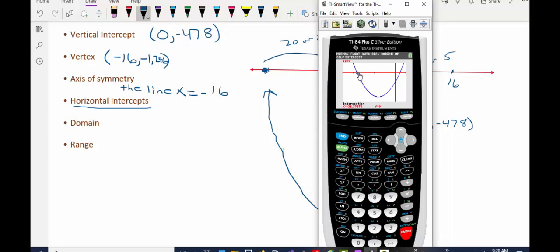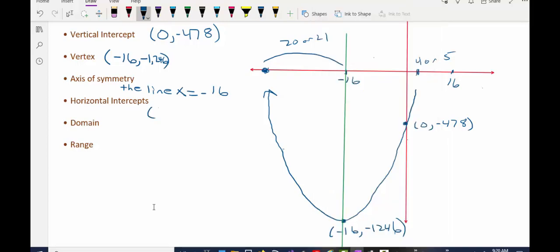And it happens to find the one on the left because of the viewing window that I'm in. So in a moment, I'll have to repeat the procedure but move my guess over to the right. But for now, I know that the horizontal intercept is roughly 36.38. So 36.38 is one of the x values that makes the y value 0.